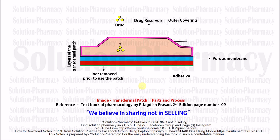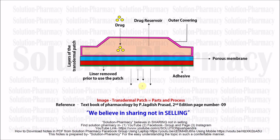Whenever we apply the transdermal patches, the drug from the reservoir will start to diffuse out. As seen in this diagram, the drug is releasing from its reservoir towards the site of application — the local skin site. This is called diffusion across the porous membrane, and that drug will produce a desirable effect for which it is intended.